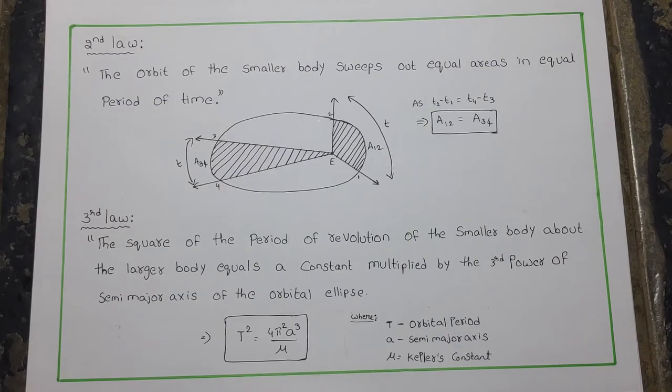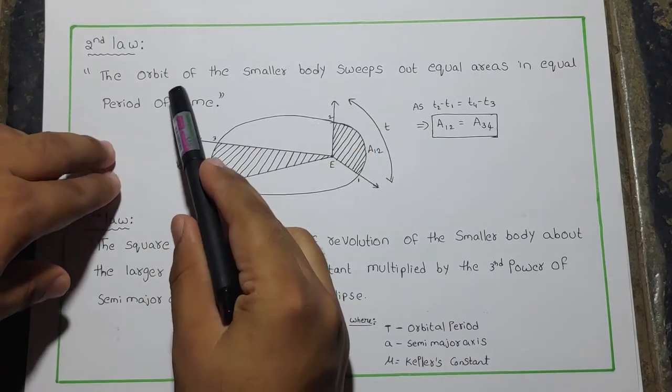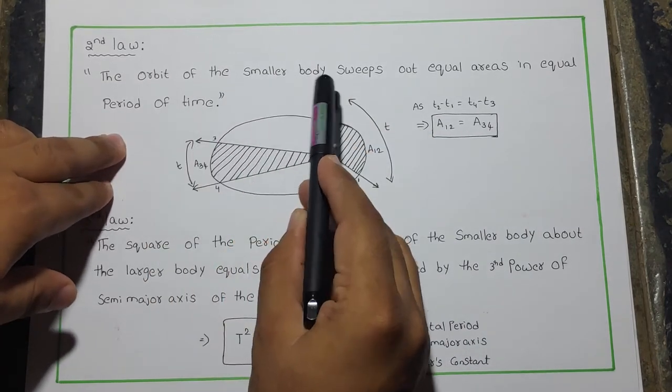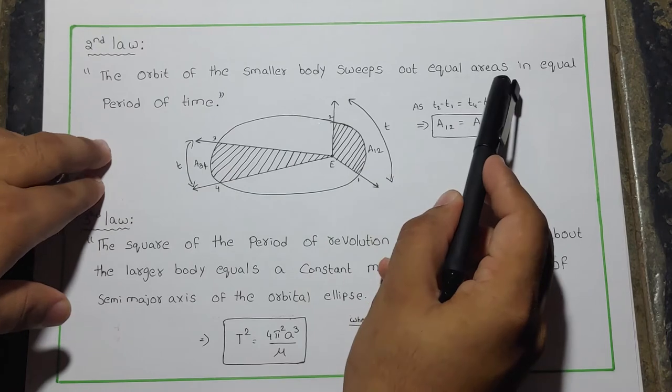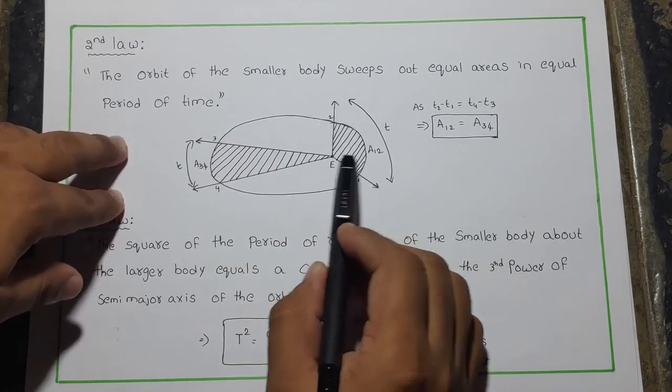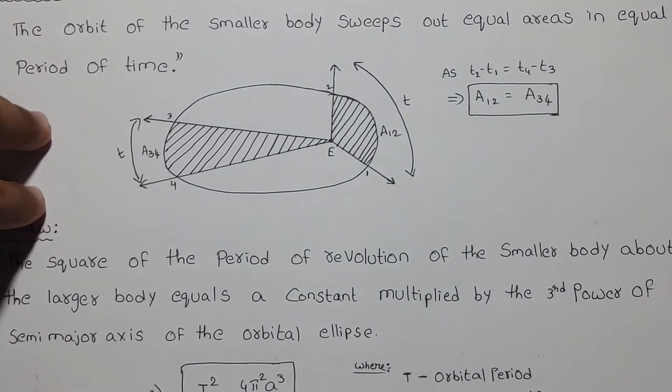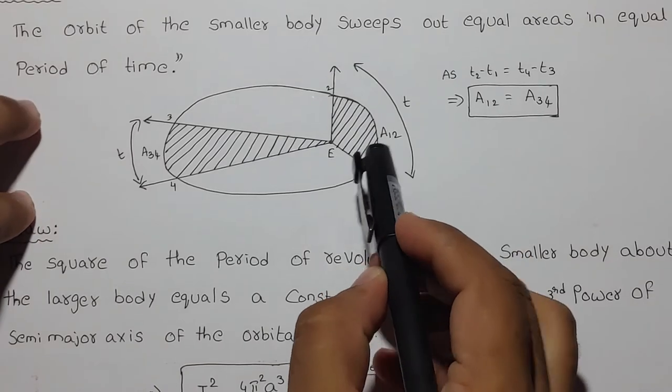Now let us see about the second law of Kepler. Kepler's second law: the orbit of the smaller body sweeps out equal areas in equal periods of time.